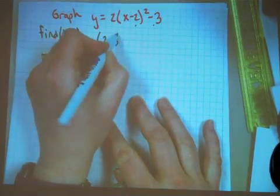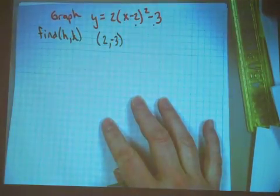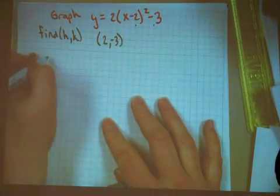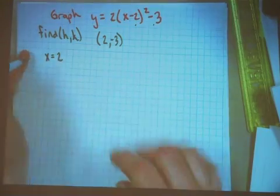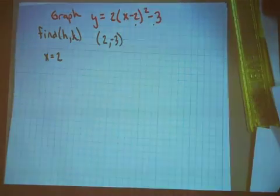The h in this case is a positive 2 and the k is a negative 3. So the vertex is at 2, negative 3, which means that the axis of symmetry is the vertical line x equals 2.